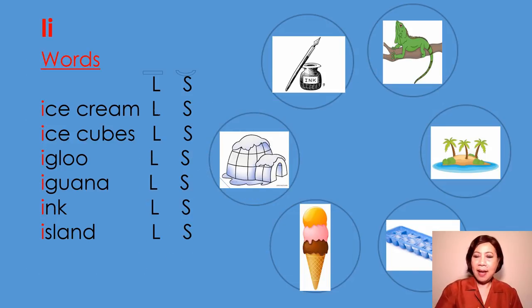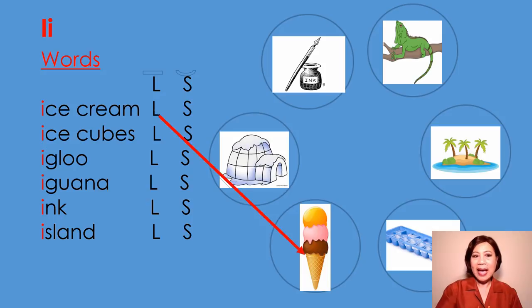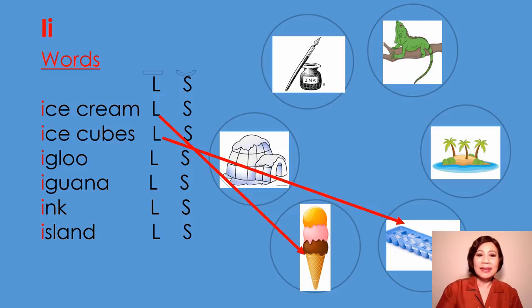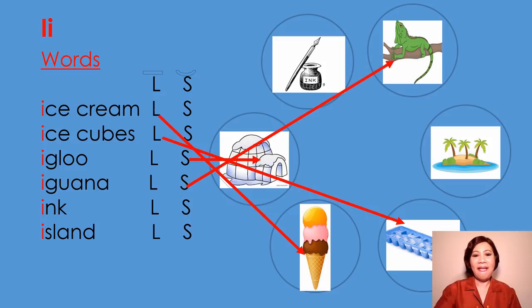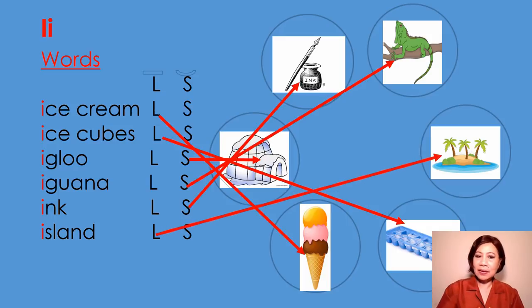Next slide is letter I. These are the words that begin with letter I. I says /ī/ as in ice cream. Ice cream begins with long vowel sound. I says /ī/ as in ice cubes. Ice cubes begins with long vowel sound. I says /i/ as in igloo. Igloo begins with short vowel sound. I says /i/ as in iguana. Iguana begins with short vowel sound. I says /i/ as in ink. Ink begins with short vowel sound. I says /ī/ as in island. Island begins with long vowel sound.